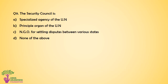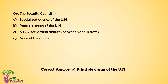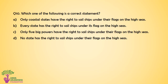Question number 9. The Security Council is Option A: A specialized agency of the United Nations. Option B: A principal organ of the United Nations. Option C: An NGO for settling disputes between various states. Option D: None of the above. The correct answer for this question is Option B — Principal organ of the United Nations.